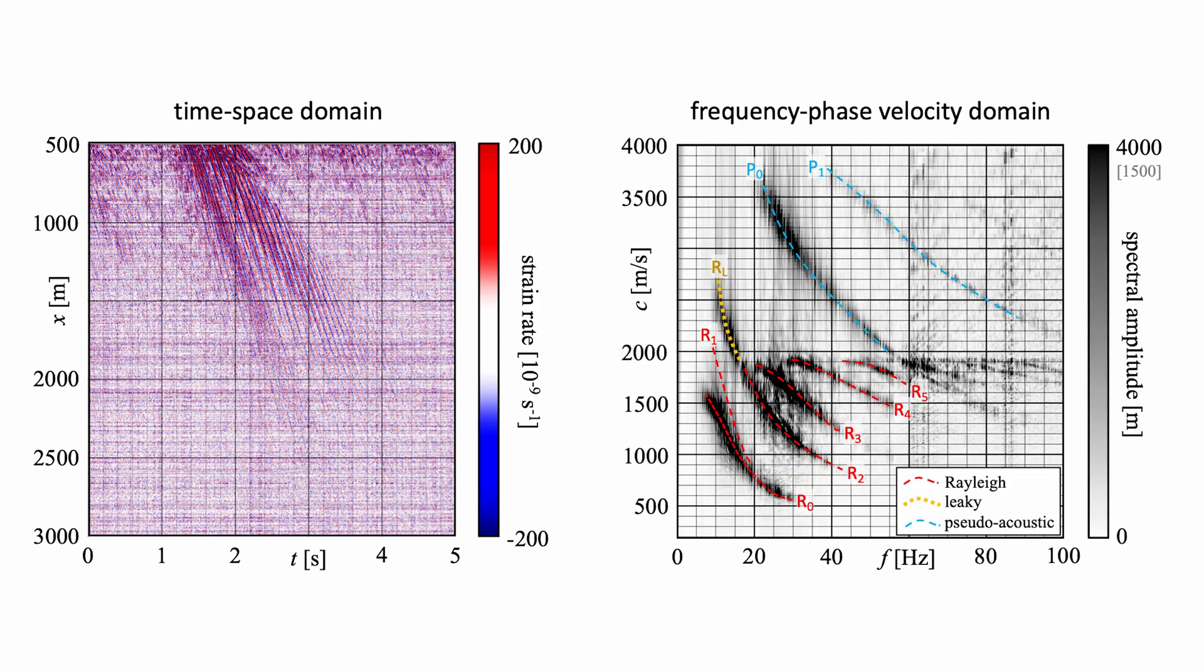Fortunately, a very simple double Fourier transform produces, without any processing, an amazingly clean frequency phase velocity representation of the data with around 15 easily visible wave propagation modes. They include multi-mode Rayleigh waves as well as leaky and pseudo-acoustic modes.